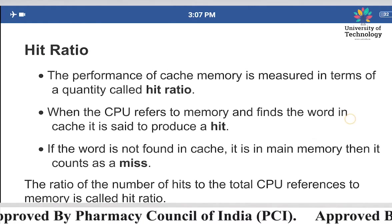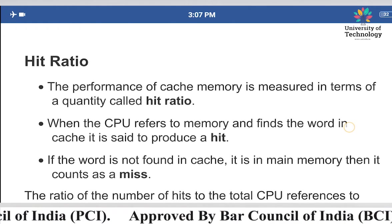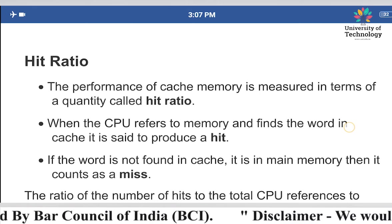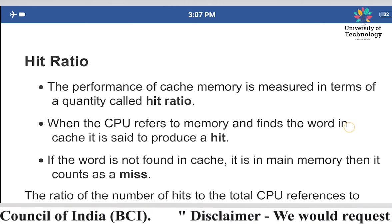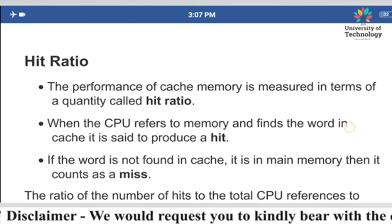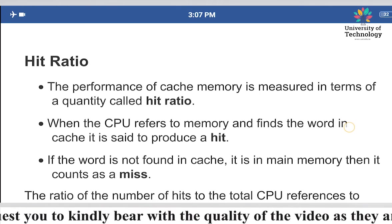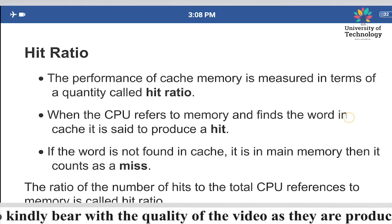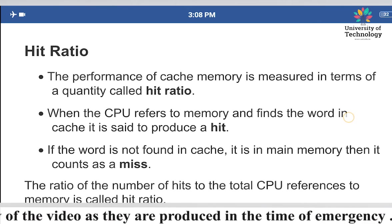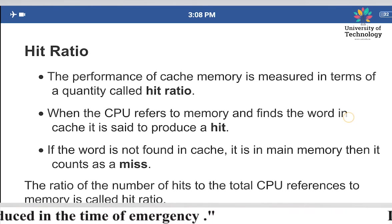The performance of the cache memory is measured in terms of a quantity called hit ratio. Hit ratio is the term by which we can actually measure or calculate the performance of cache memory.